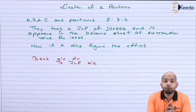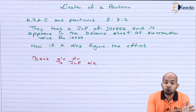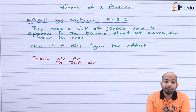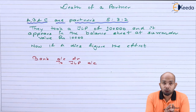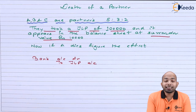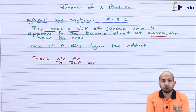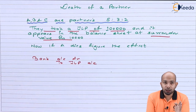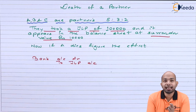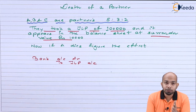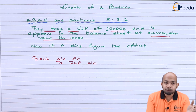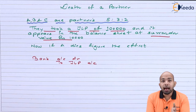We have an illustration for your reference. Here we have A, B, and C who share profit and loss in the ratio 5:3:2. They took a joint life policy of 1 lakh rupees, and the same appears in the balance sheet at the surrender value of rupees 10,000. That means they took a joint life policy of 1 lakh and it is appearing in the balance sheet at a surrender value of 10,000. Now, what happens at the date of maturity if it is mentioned at surrender value versus if it is not mentioned at surrender value?